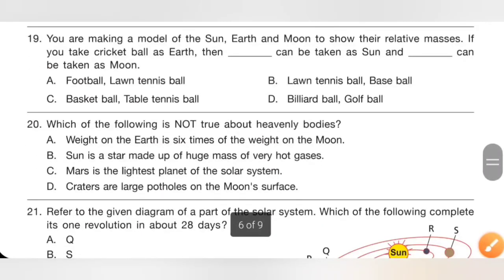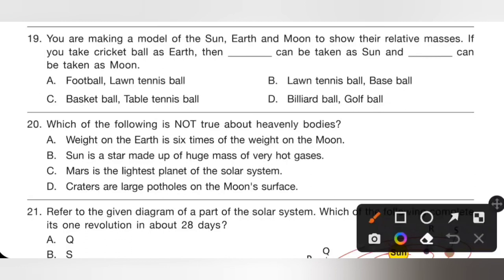Question 19: You are making a model of the sun, earth, and moon to show their relative masses. If a cricket ball is taken as earth, what represents the sun and moon? The mass of the sun is large compared to earth and moon. The mass of earth is large compared to the moon. We can take a basketball as the sun and a table tennis ball as the moon. Option C is the correct answer.